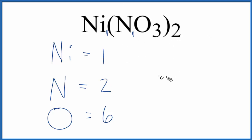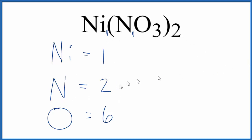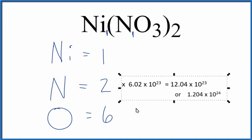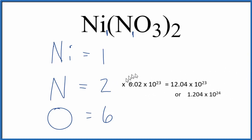Sometimes you'll be asked how many, say, nitrogen atoms are in one mole of Ni(NO₃)₂. To do that, you'll take the number of atoms and multiply it by Avogadro's number. So we take two times Avogadro's number — this gives you the number of nitrogen atoms in one mole of Ni(NO₃)₂.